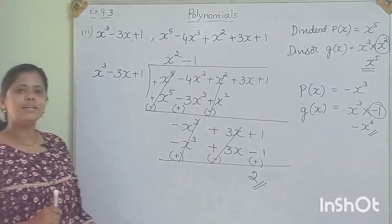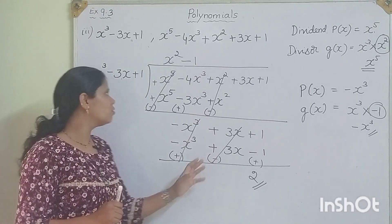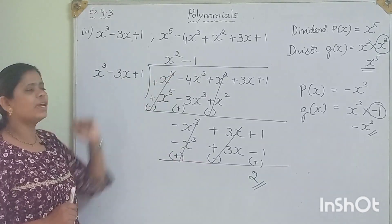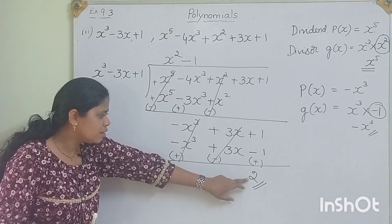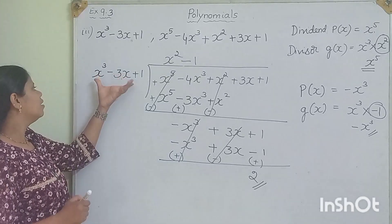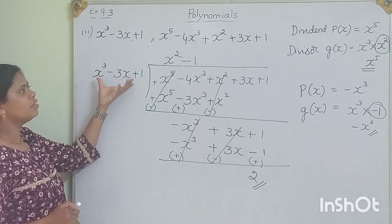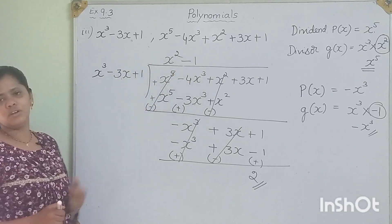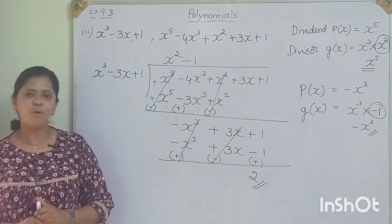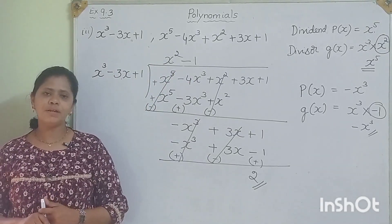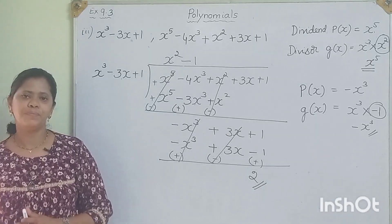Since we did not get 0 as the remainder, the first polynomial is not a factor of the second polynomial. We got 2 as the remainder, therefore x cubed minus 3x plus 1 is not the factor of x to the power of 5 minus 4x cubed plus x squared plus 3x plus 1. Hope you have understood. Stay connected, keep supporting. Thank you.